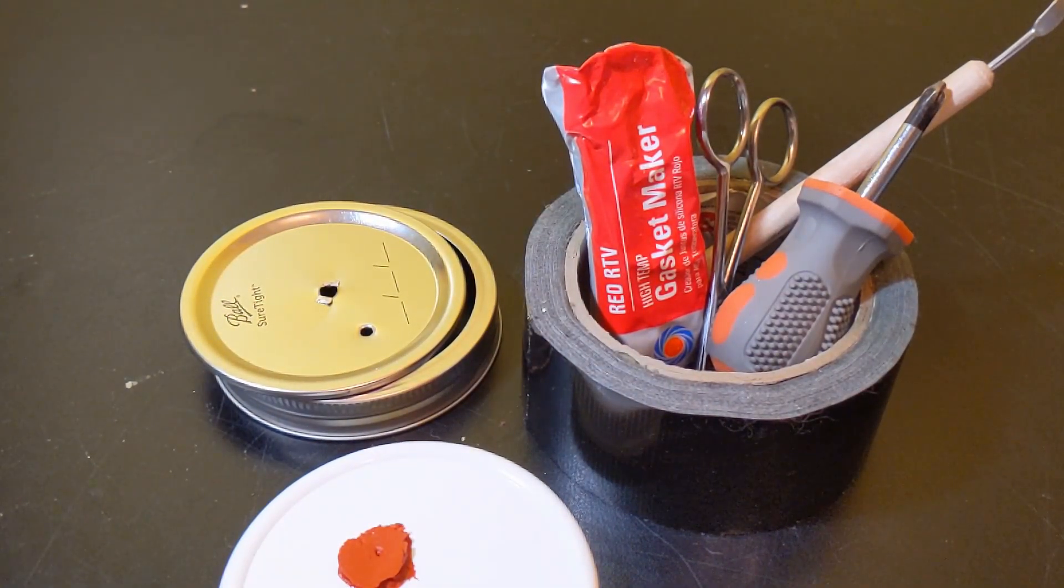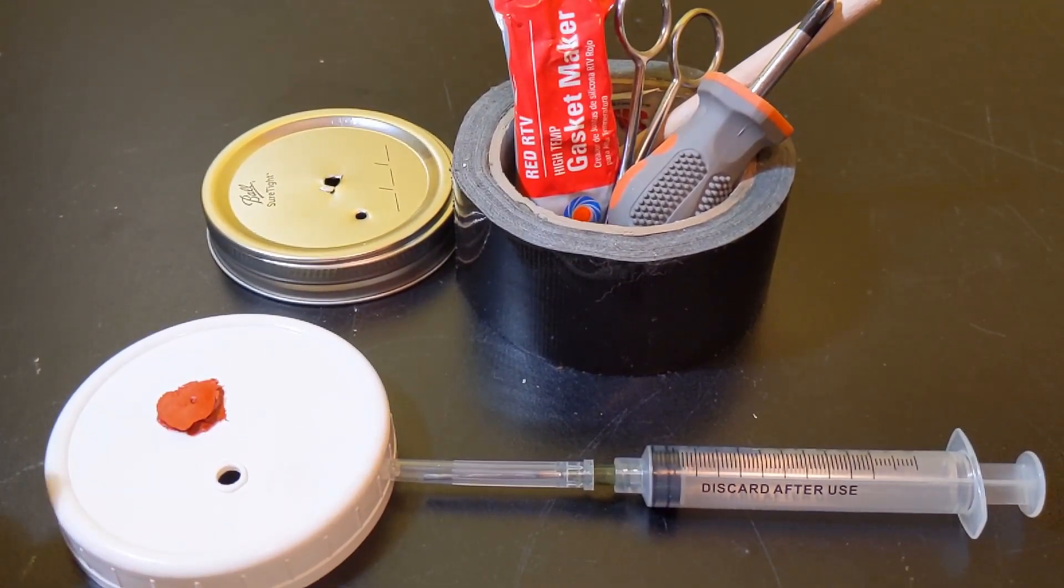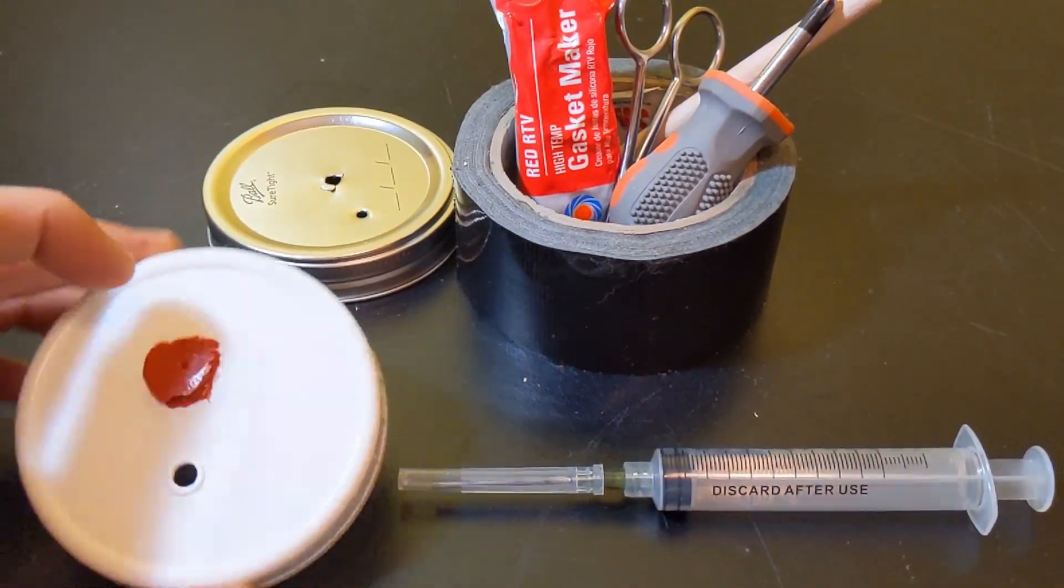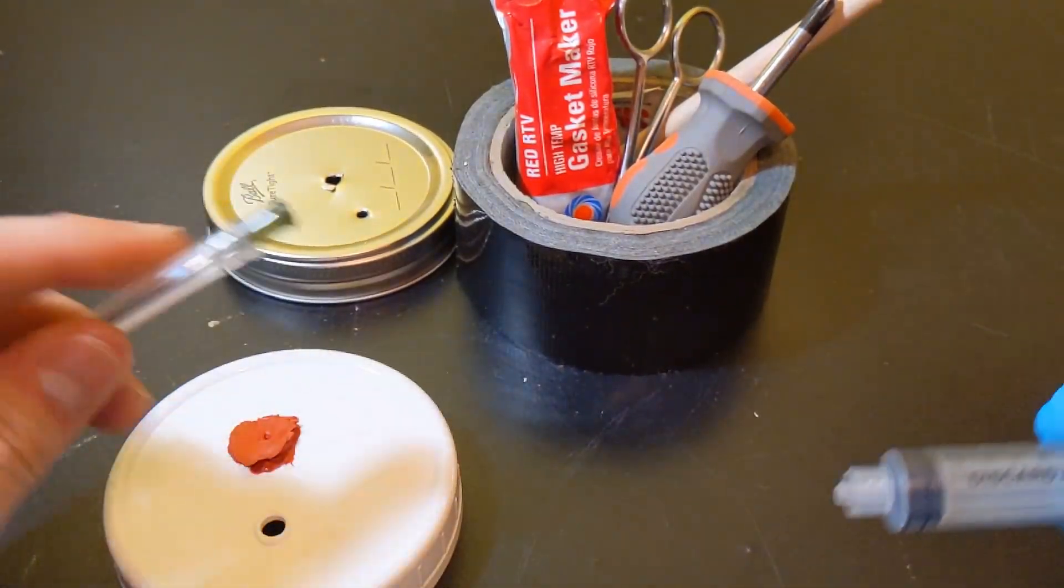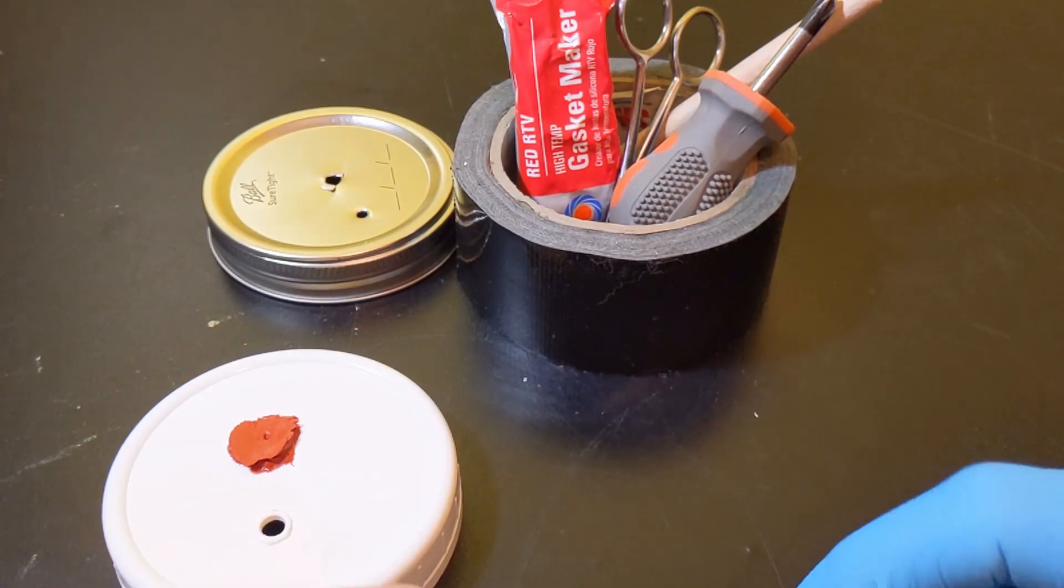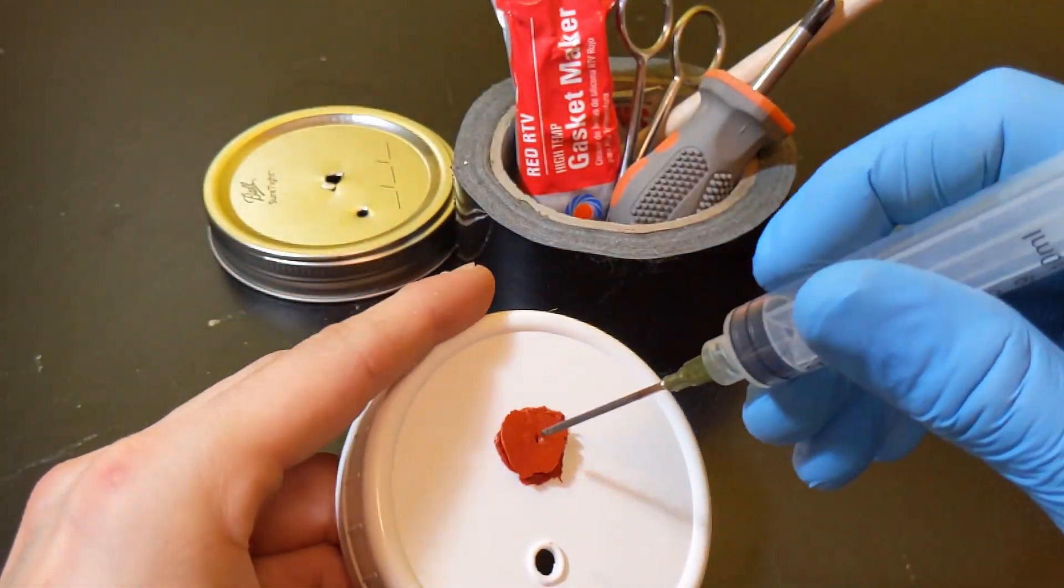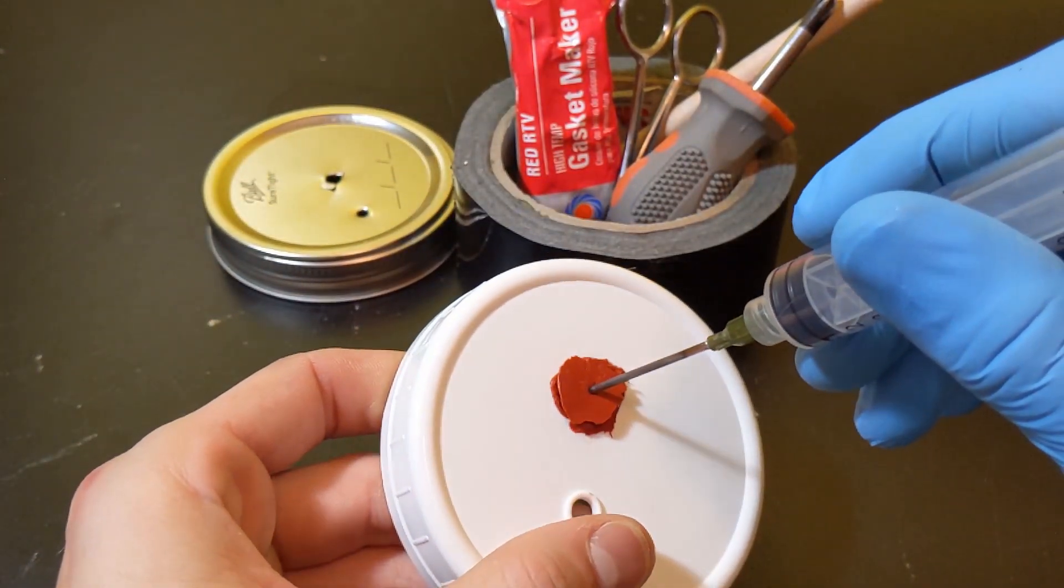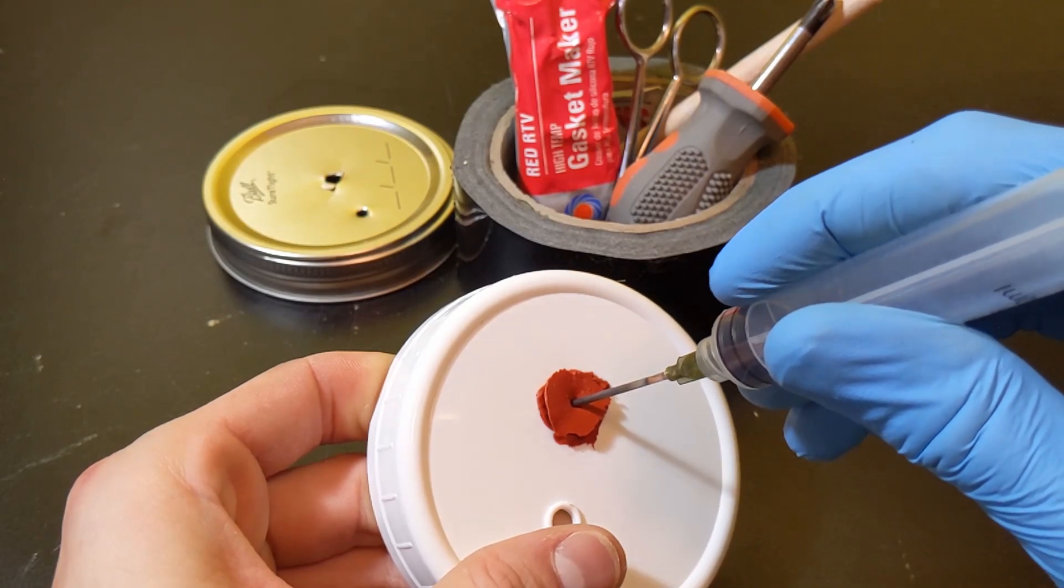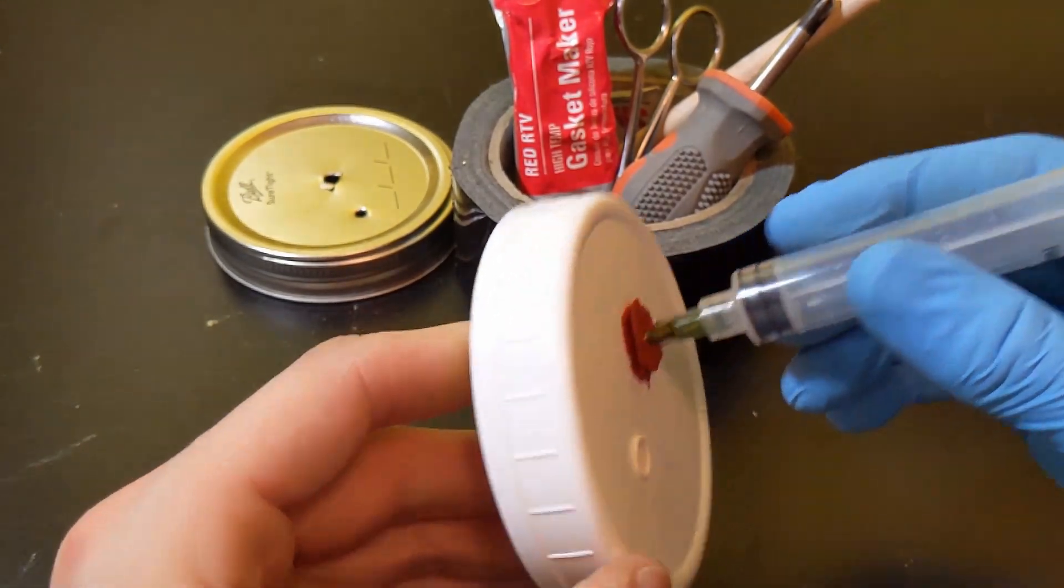Now what is an inoculation port? So in mycology when we introduce any kind of spores or cultures to a spawn, we have to be as sterile and as clean as we can because anytime we have contact with the outside environment and the inside of either the jar we're using, we're exposing the grains to contamination or possible contamination.